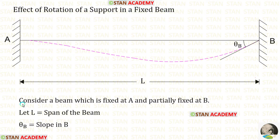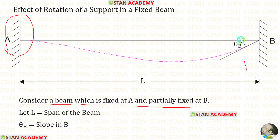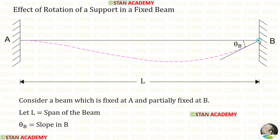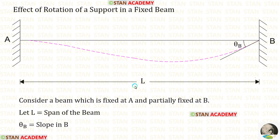Let us consider a beam which is fixed at A and partially fixed at B. You can see that the tangent at point B rotates at the angle of theta B — that is why we say the beam is partially fixed at B. Let us keep L as the span of the beam and theta B as the slope at point B.